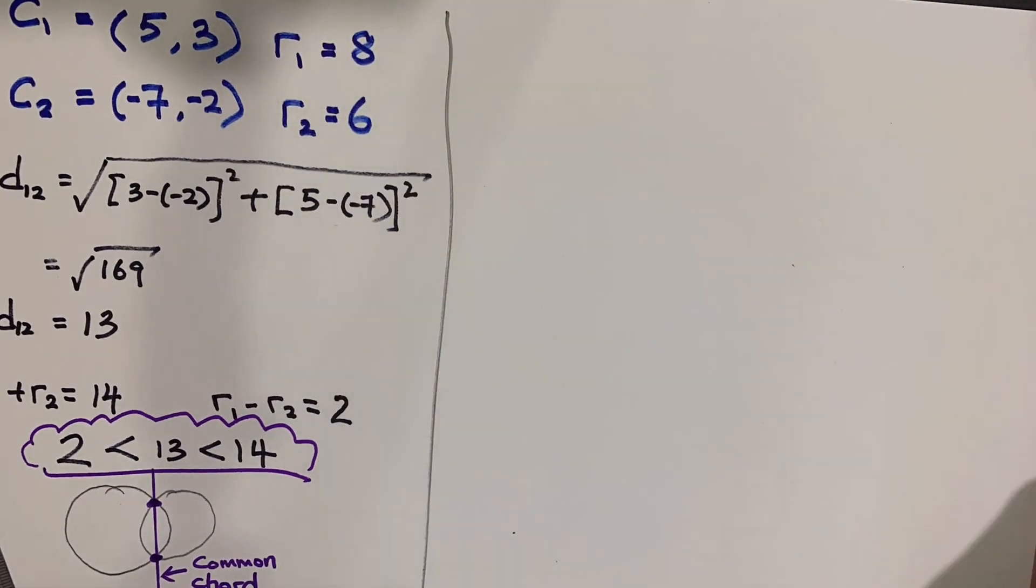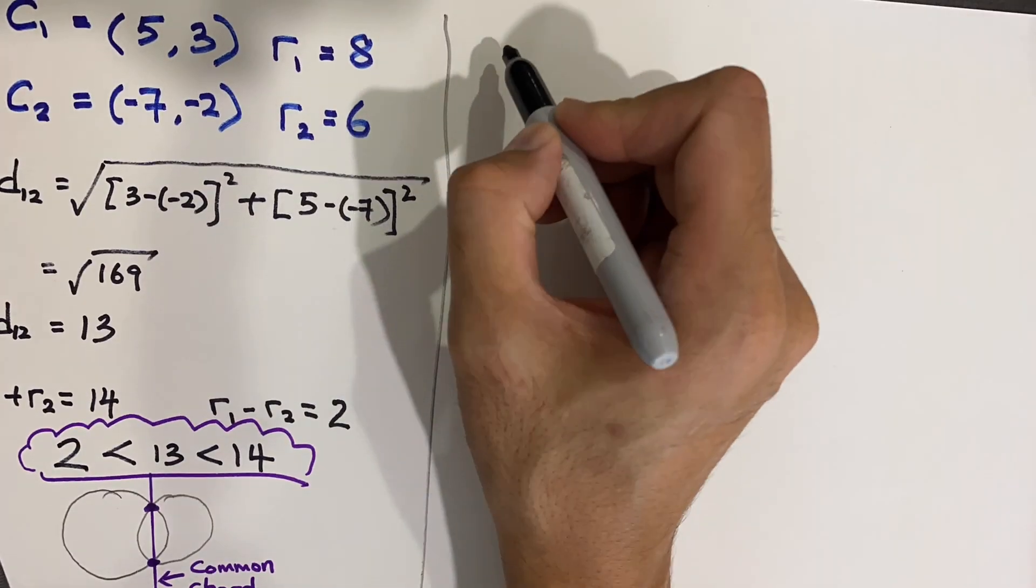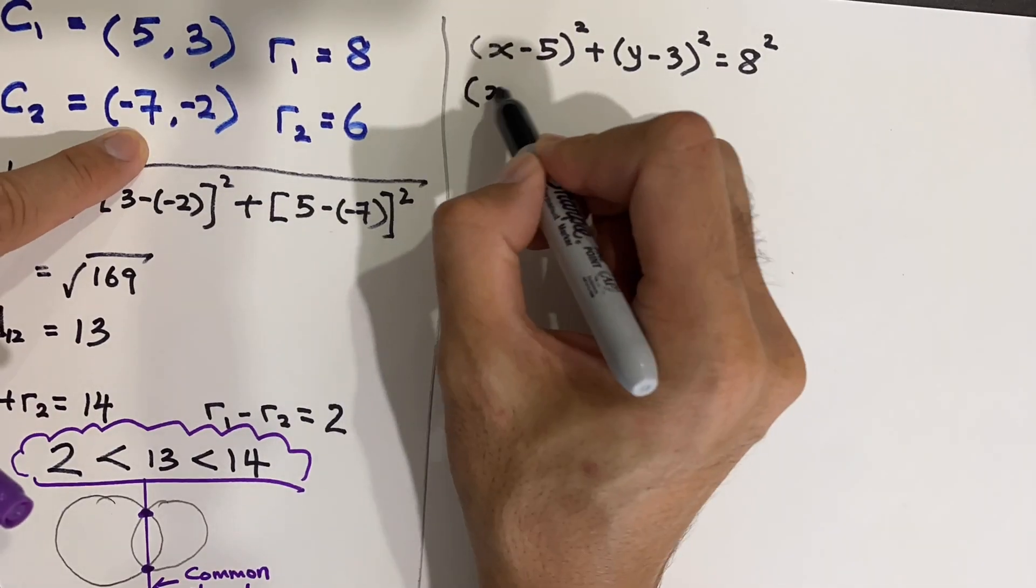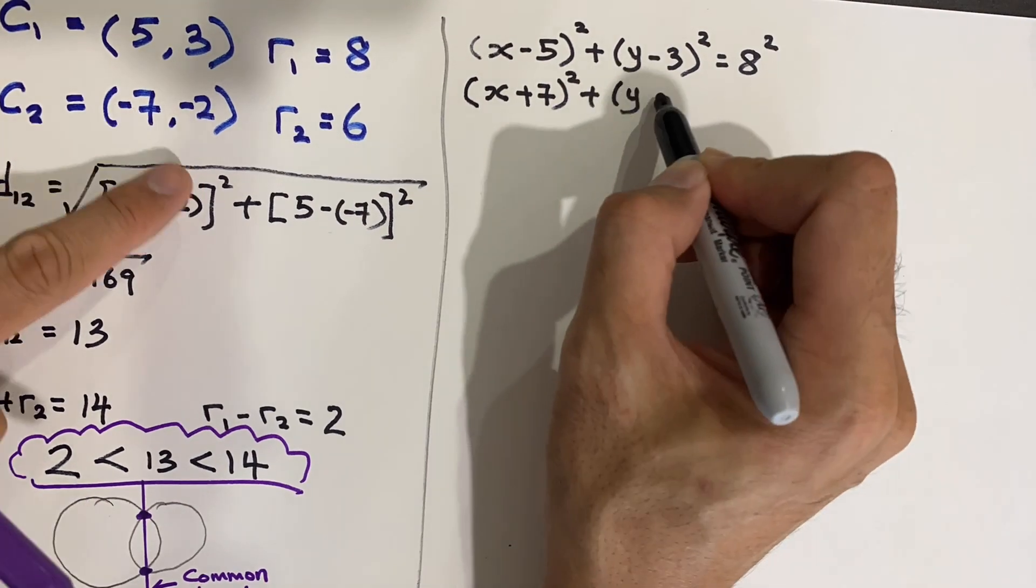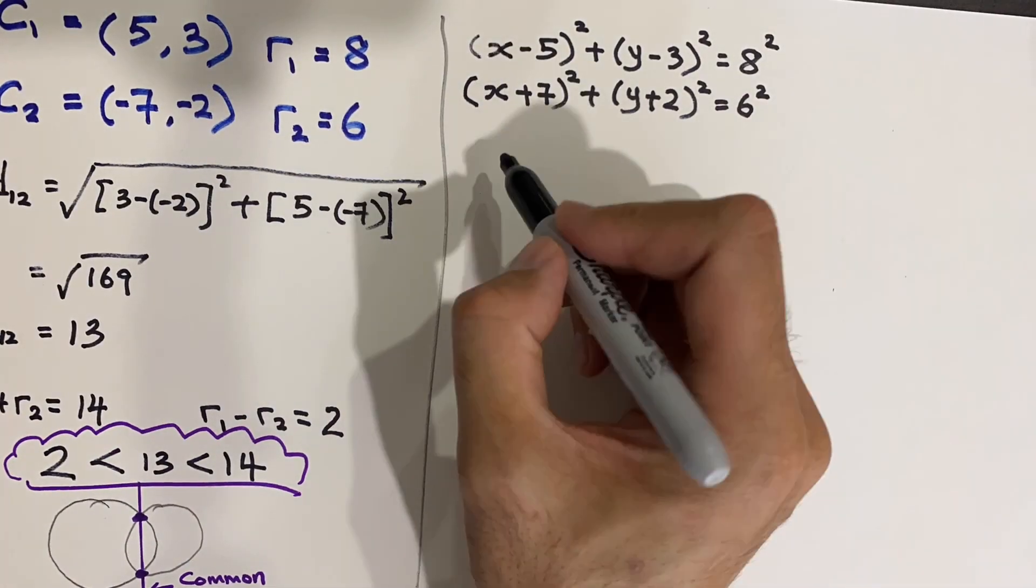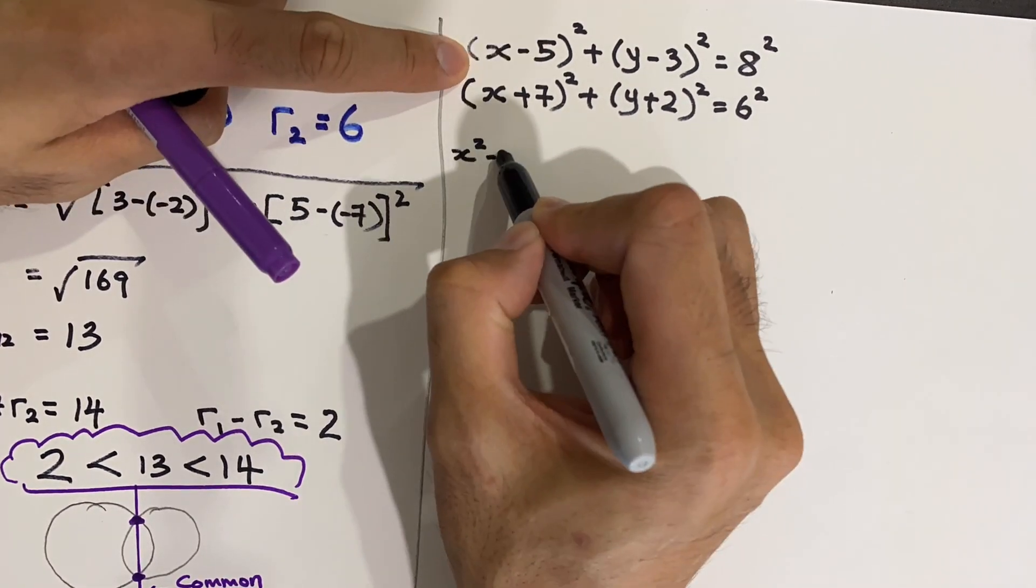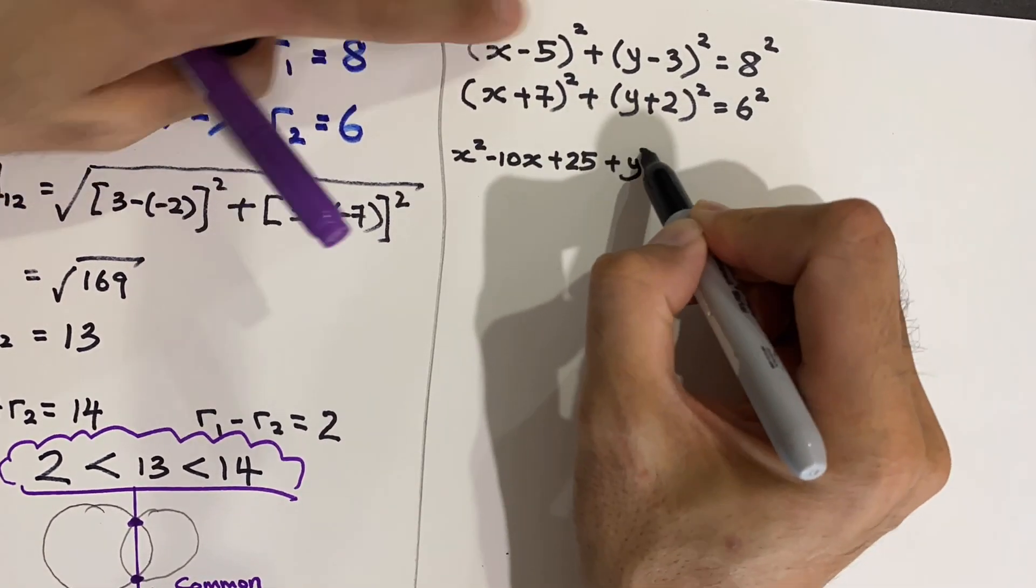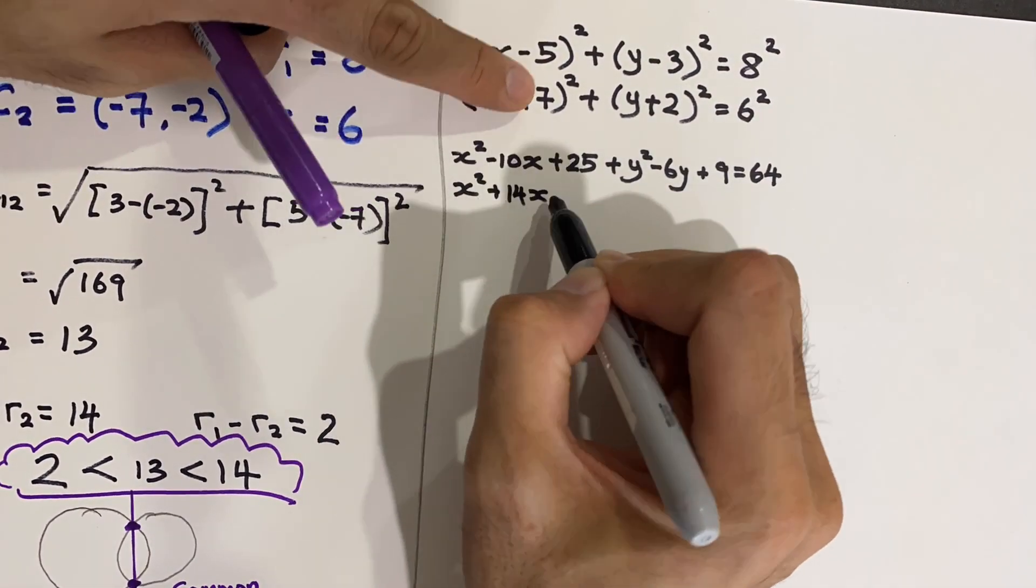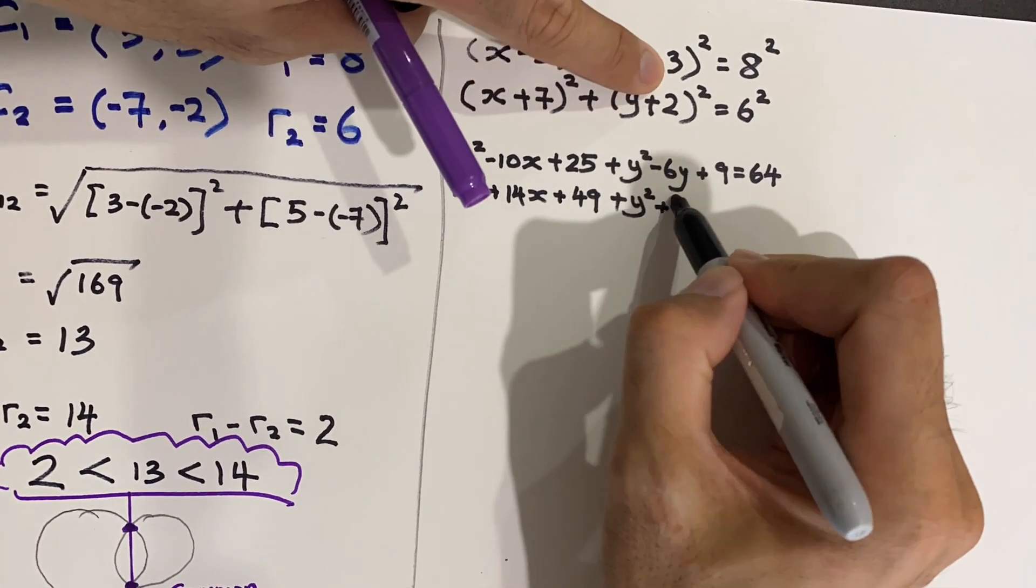What I need to do next is to find out what's the common chord equation. So all I need to do is to expand this equation, put it into the equation of circle form, and then expand it, and then subtract both equations. Now what I would advise you to do is actually pause this video and try to do it yourself on a piece of paper, and then verify your answer with mine here.